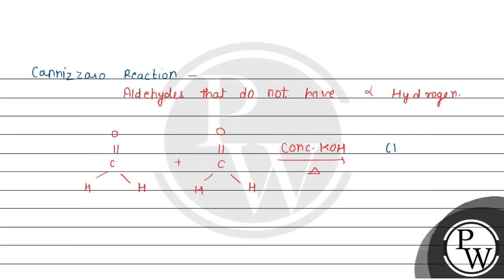We get two products: one is methyl alcohol (CH3OH), and the other is HCOOK where O is minus charge and K is positive charge. These are our products.